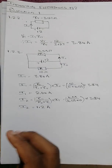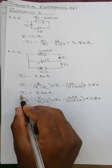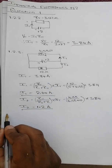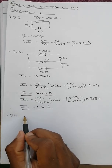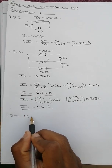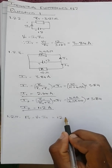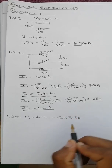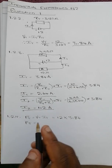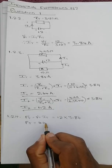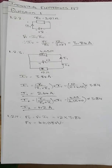Question 1.2.4: calculate the total power consumed by the circuit. PT equals VT times IT, which is 12 times 3.84. Therefore PT equals 46.08 watts. And that's it for question 1.